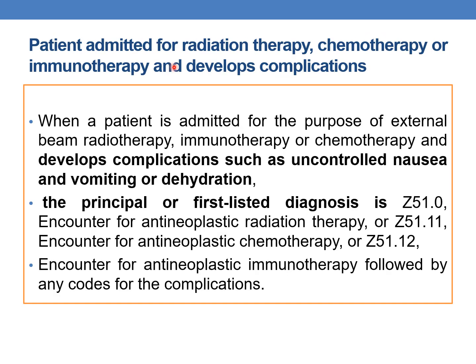Next guideline: Patient admitted for radiation therapy, chemotherapy, or immunotherapy and develops complications such as uncontrolled nausea and vomiting or dehydration. Then the PDX should be Z51.10, Z51.11, or Z51.12, followed by codes for the complication. This is important: whenever a patient is admitted for radiation therapy, chemotherapy, or immunotherapy and develops complications, the PDX remains the therapy code, followed by complication codes as SDX.